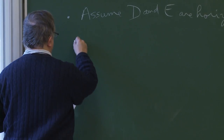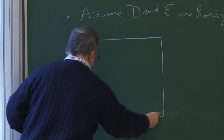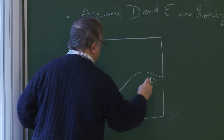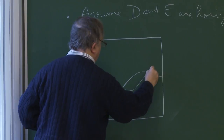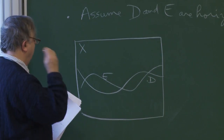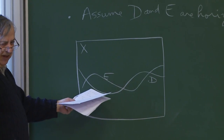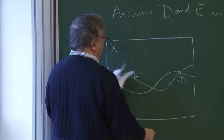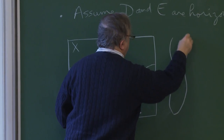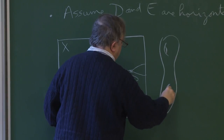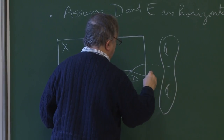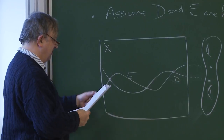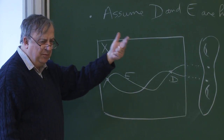Then we have the following picture. We have X, we have D, and we have E. D and E meet at finite places — they meet here and here. And what we shall see is that we have to consider that D and E meet at infinity. Somehow E and D can try to be parallel but they have to meet at infinity.